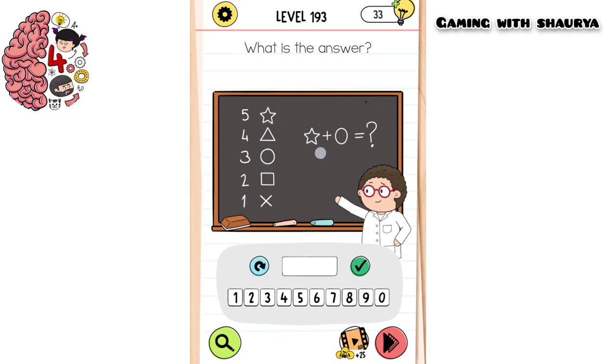On the right side we have to find what is the value of star plus zero. So this is a zero, not a circle. The value of star is five, as you can see over here it is five.